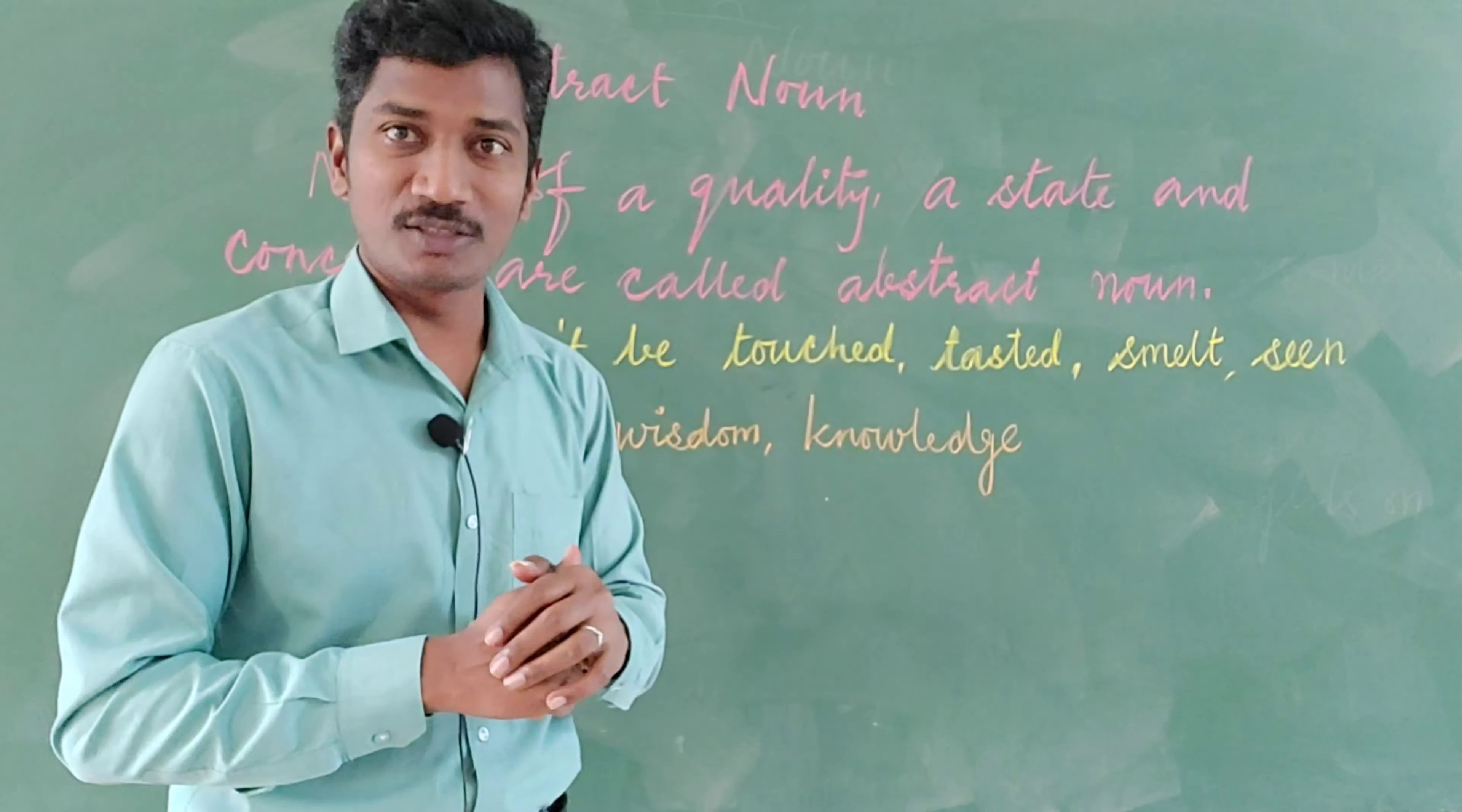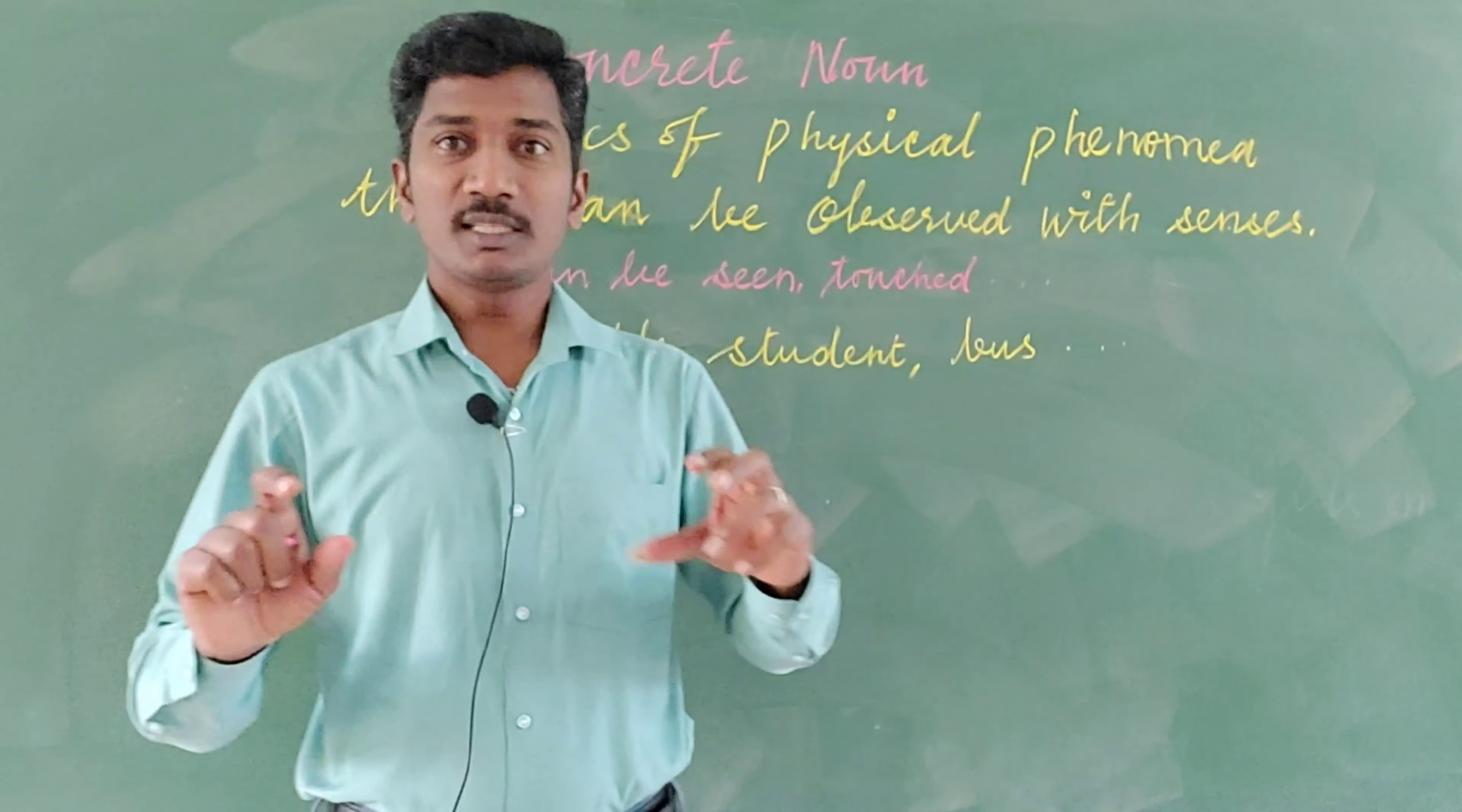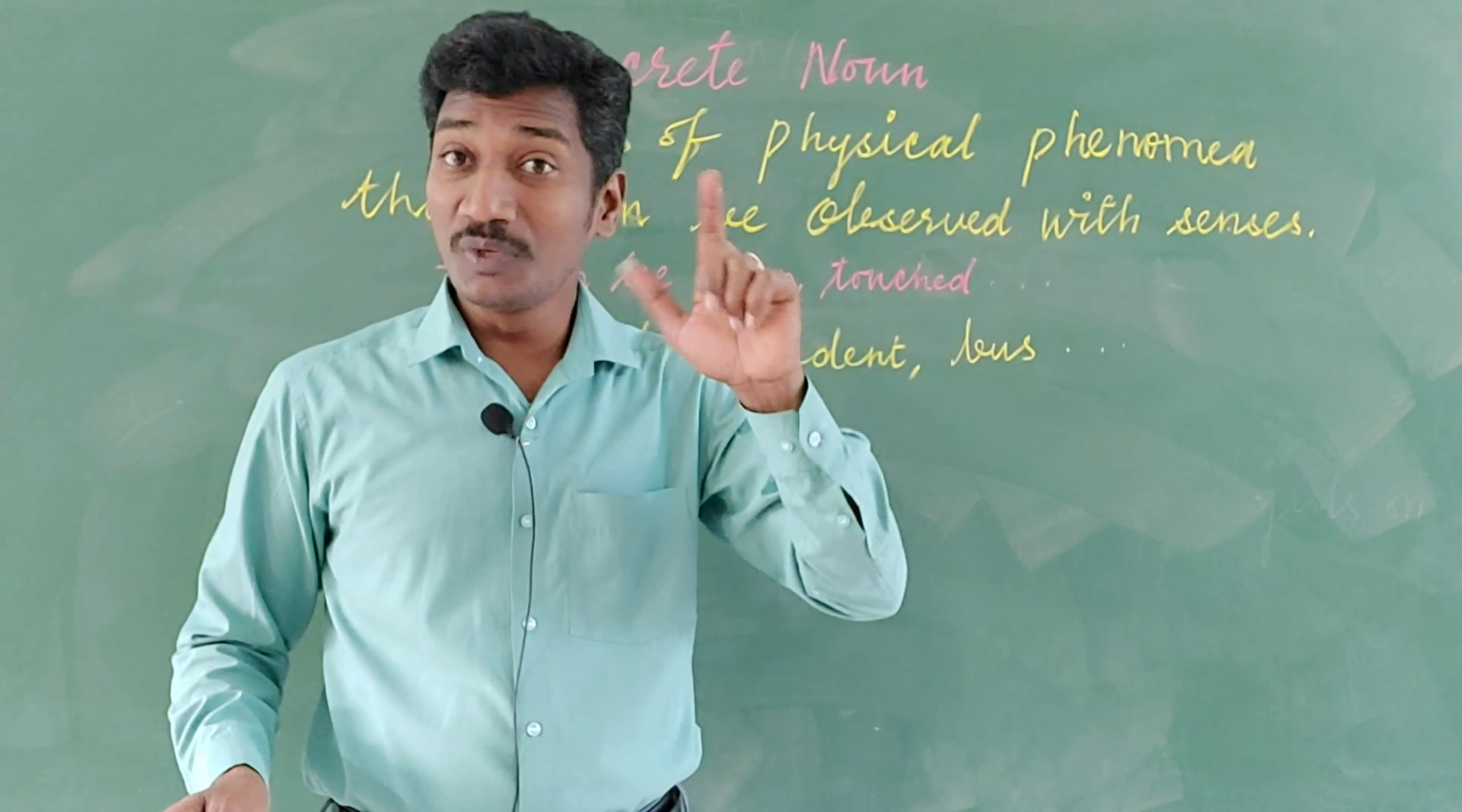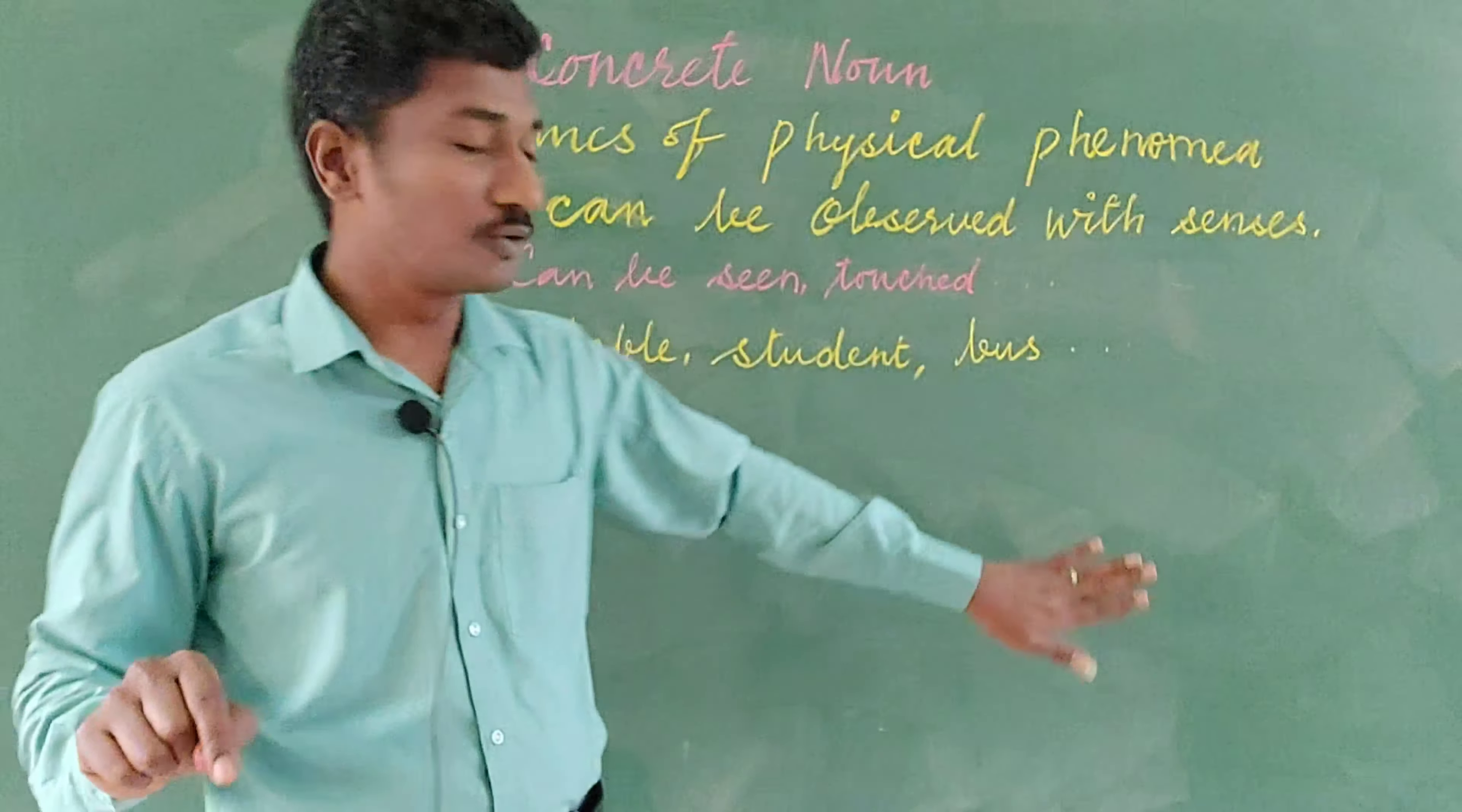Come, let us go to another type of noun: concrete noun. Here the next kind is concrete noun. We understand the word concrete - it is quite opposite to the previous one, abstract noun. Concrete means that which we can touch with our senses. We can touch, we can see, we can hear.